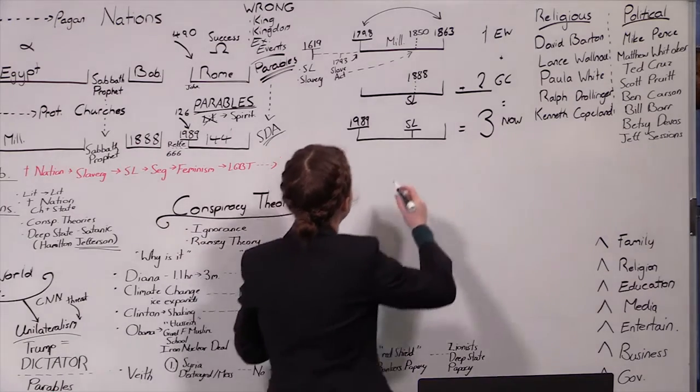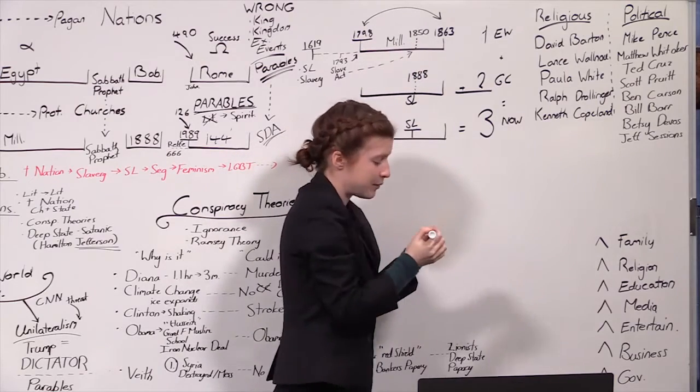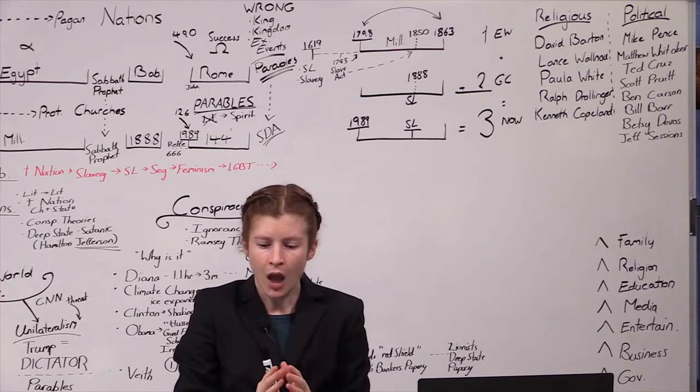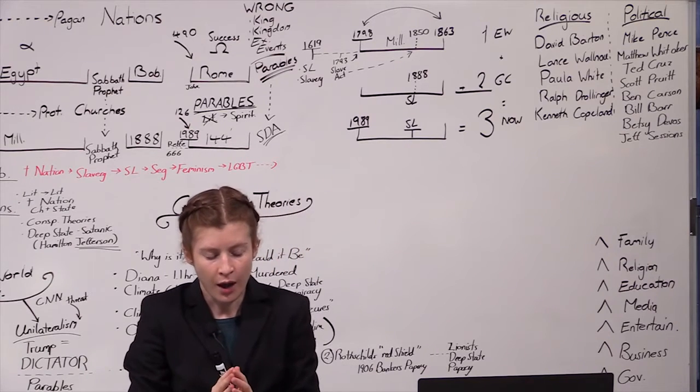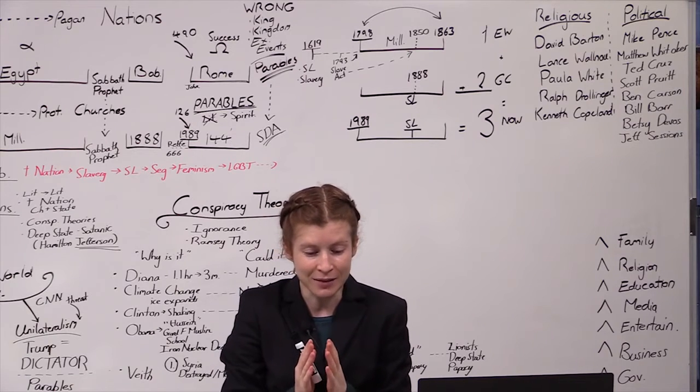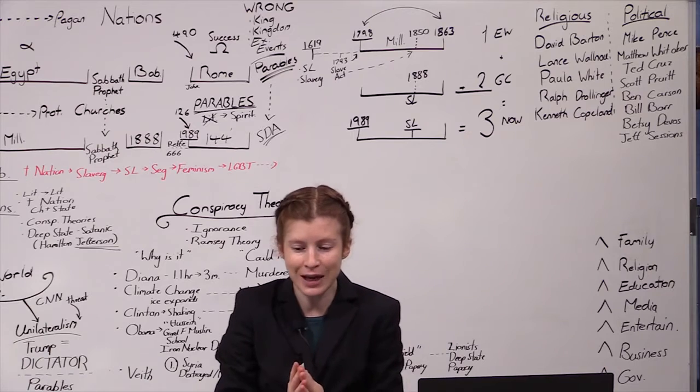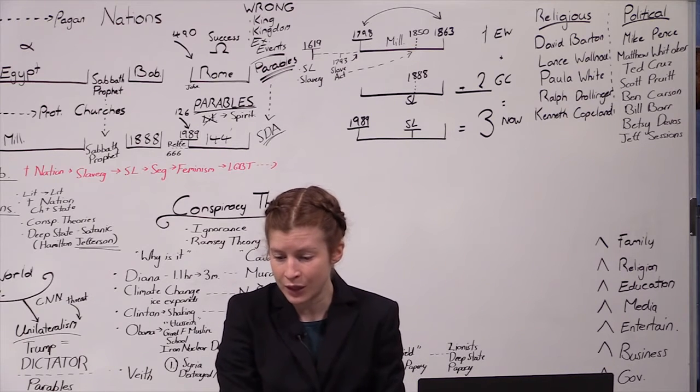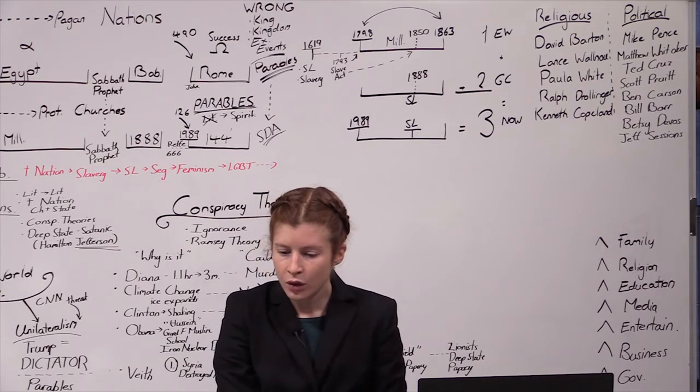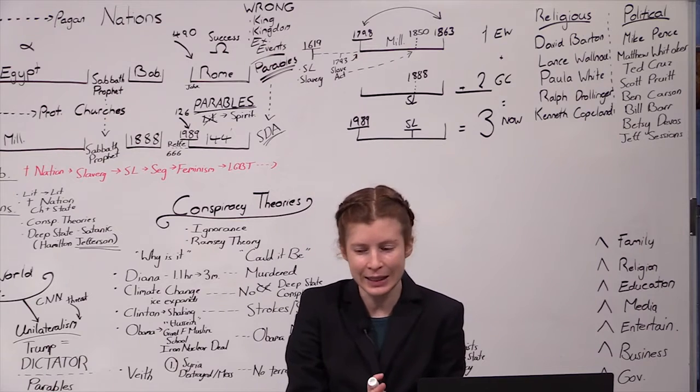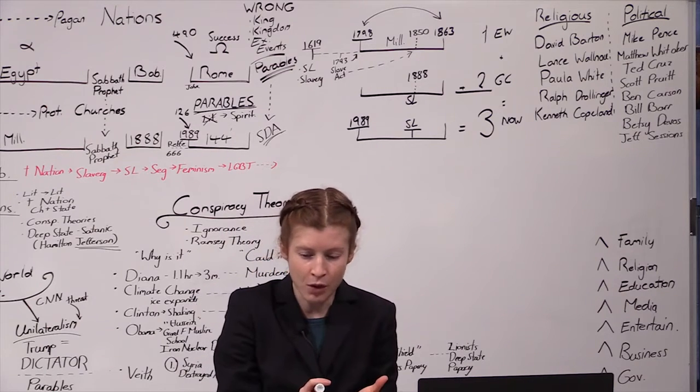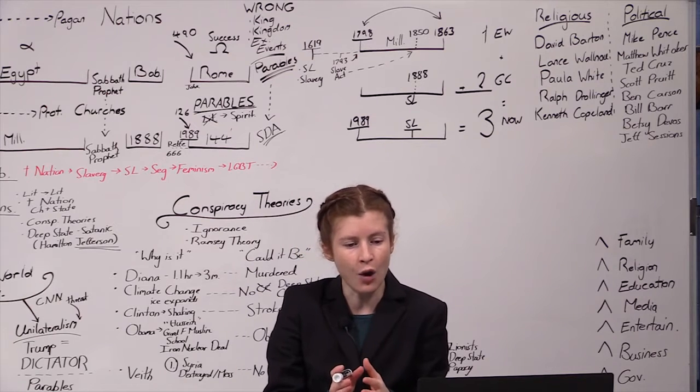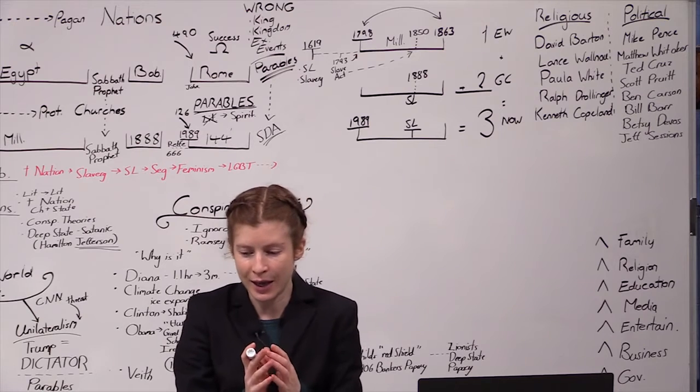These two issues that America has - church and state and slavery - were all introduced in 1619 at the very beginning. They had a fully functioning Sunday law and fully functioning system of slavery. Prior 1798, also the slave act. All they did in 1850 was enforce what was already there. All they're doing in 1888 is saying we finally need to enforce what was already there.